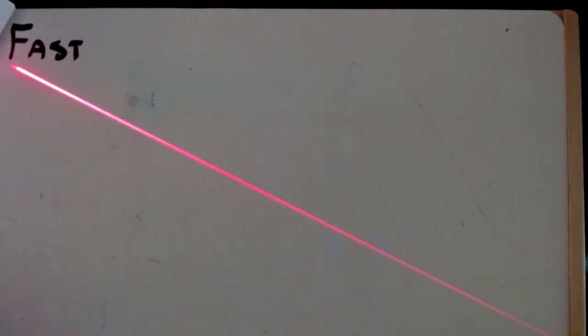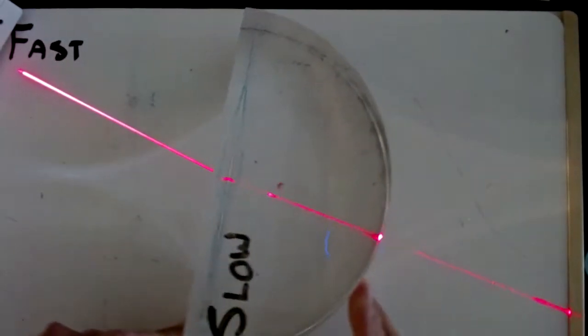We know that light travels very fast in air or a vacuum. It travels at three times ten to the eighth meters per second. So if we have light traveling through in this really fast manner, three times ten to the eighth, and it goes into a new material, we know it's going to bend.